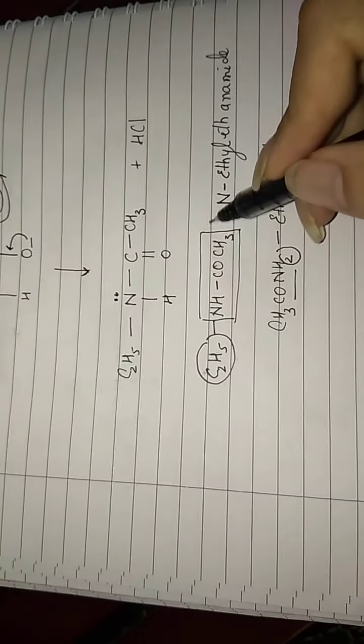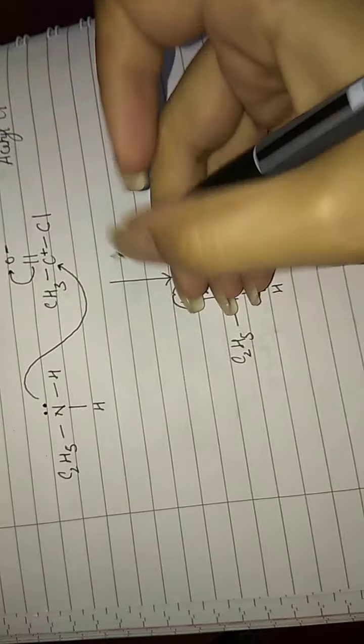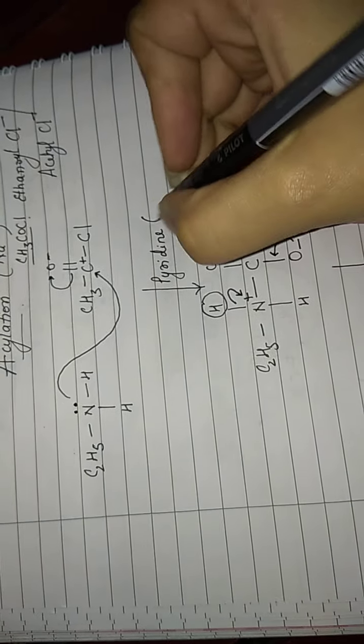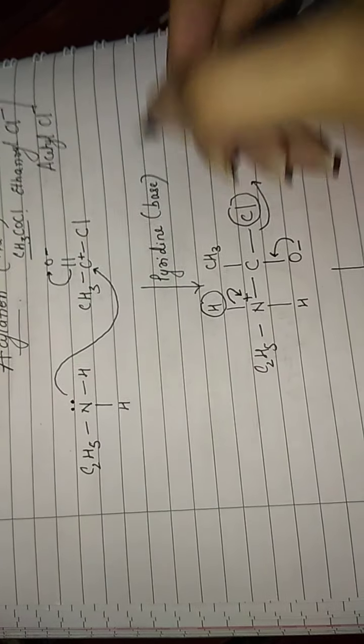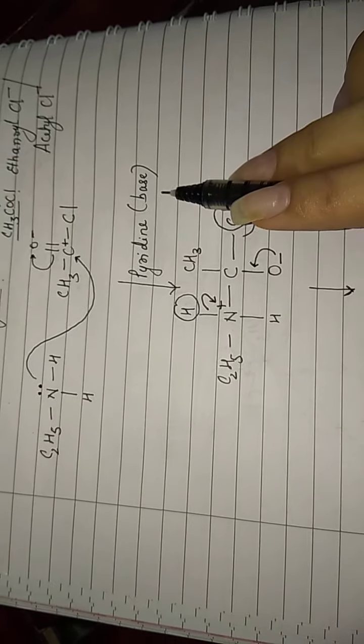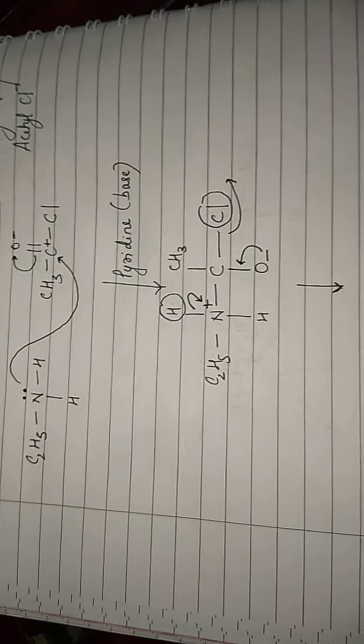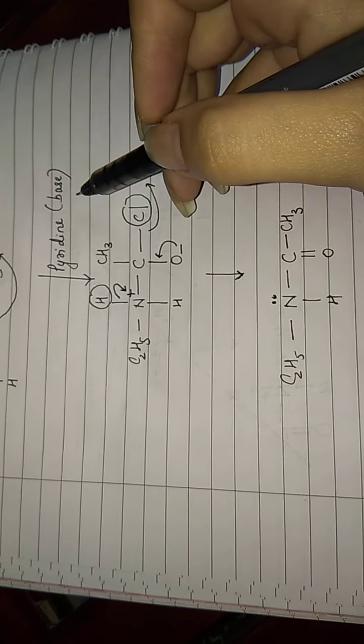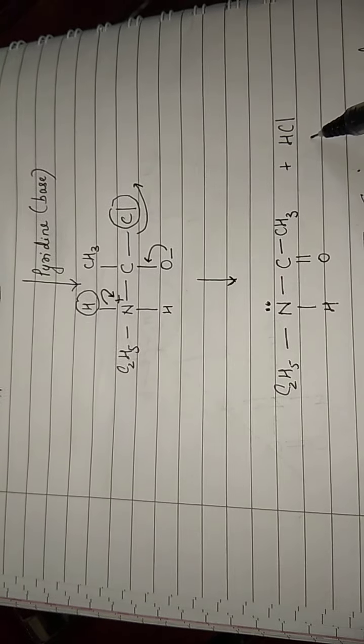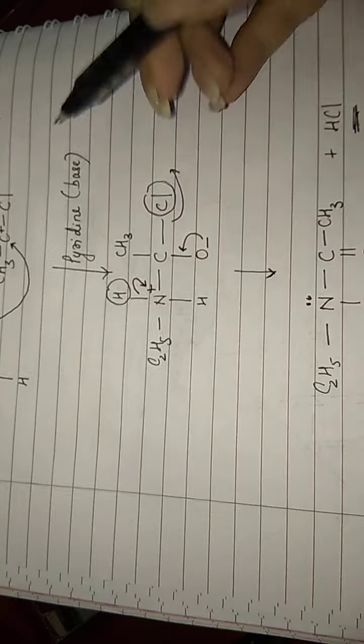This reaction takes place in the presence of a base, pyridine. Pyridine is a base—you need not do the structure for class 12, you only need to remember that pyridine is a weak base. Now why this base is being used in this particular reaction is often asked in the reasoning part.